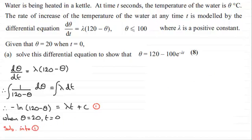And if we do that, we end up with minus the natural log of 120 take away 20, which is going to be minus the natural log of 100. And on the right-hand side here, if t = 0, this term goes to zero and we're just left with c. So you can see that c is minus the natural log of 100.